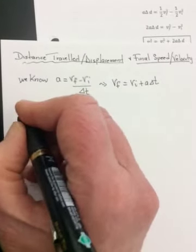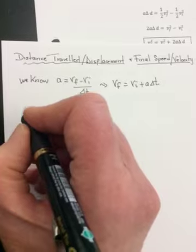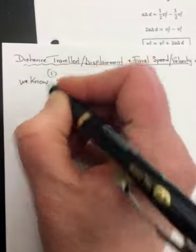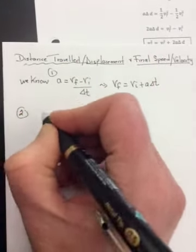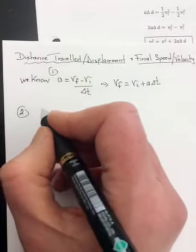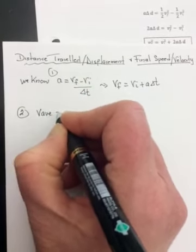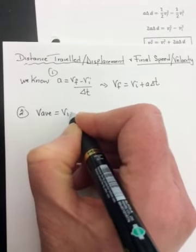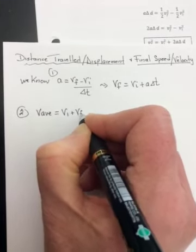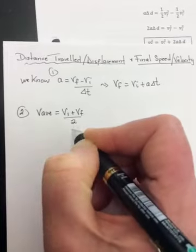What else do we know? Well, we know the average of anything. So this was the first thing we know. We know the average of anything is just the two things added together and divided by 2. So that means the average velocity would be equal to the initial velocity plus the final velocity divided by 2.